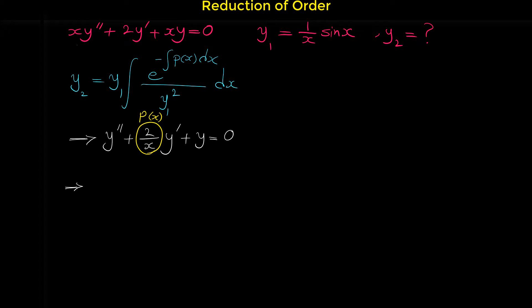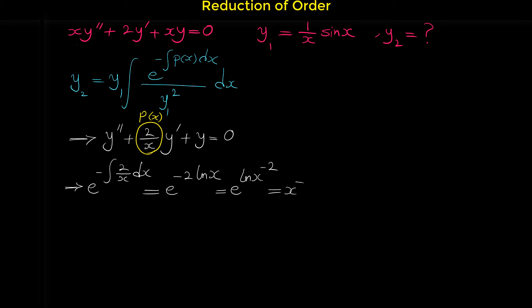Based on the formula, we first calculate the part e^(−∫p(x)dx) = e^(−∫(2/x)dx). The integral of 2/x is 2·ln(x), so this becomes e^(−2·ln(x)) = e^(ln(x^(−2))) = x^(−2), since e^(ln(expression)) equals that expression.